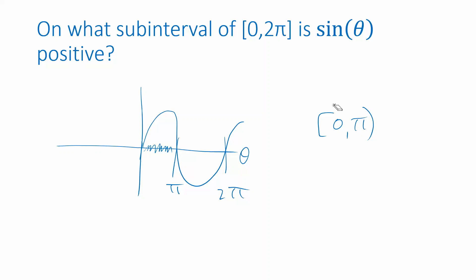Actually, since we're asking where it's positive, we want to know where the output is strictly greater than 0. So at the endpoints, 0 and π, sine of 0 is 0, sine of π is 0. But 0 is neither positive nor negative. If we only want positive values, then we want this open interval from 0 to π.